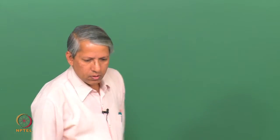What is the corresponding operator for this dipole-dipole interaction? We simply replace the magnetic moment of each particle by the corresponding operator in terms of angular momentum. So μ_e is replaced by g_e β_e S, and μ_N is replaced by g_N β_N I. This gives the expression for the dipole-dipole Hamiltonian operator for the electron-nuclear interaction.